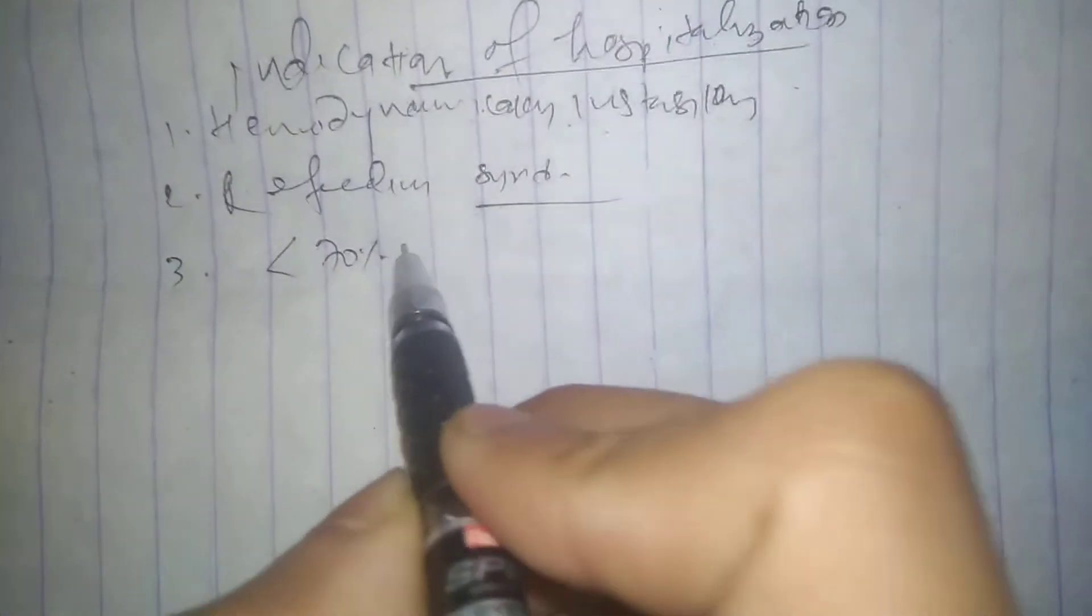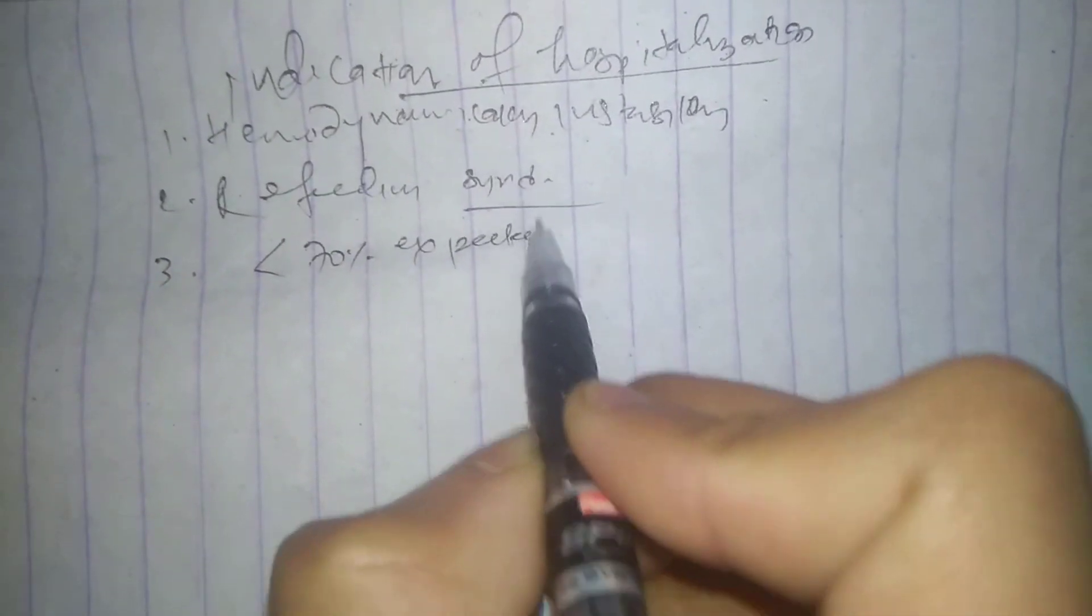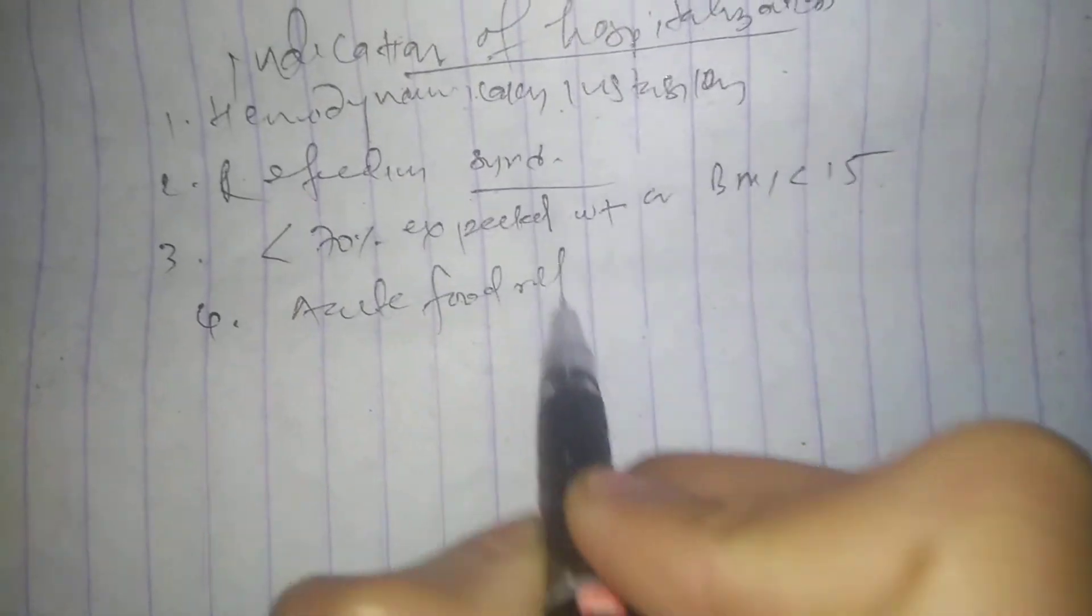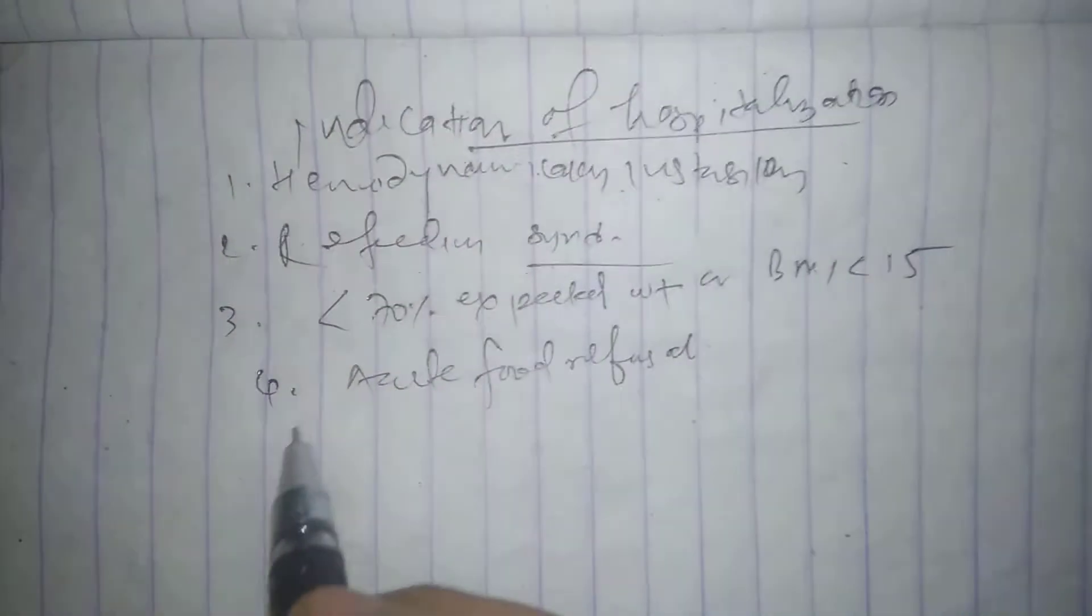Third, less than 70% expected weight or BMI less than 15, then should be admitted. Or acute food refusal, then should be admitted.